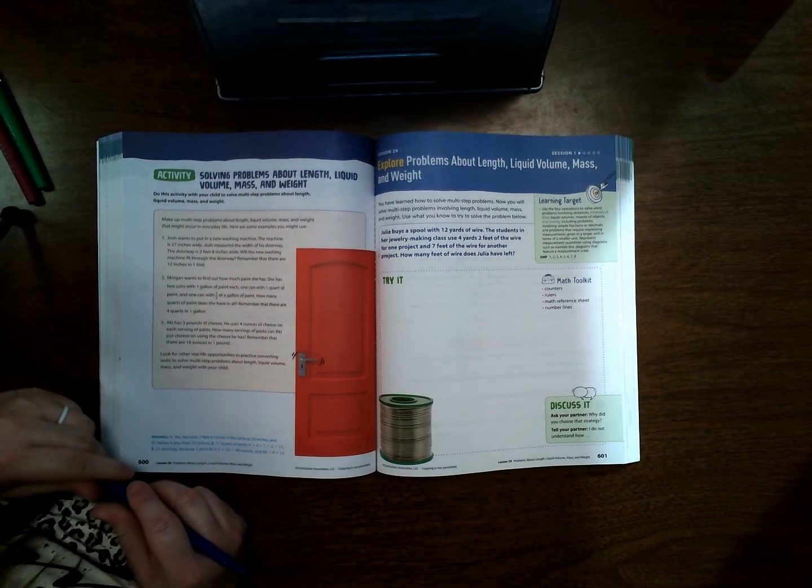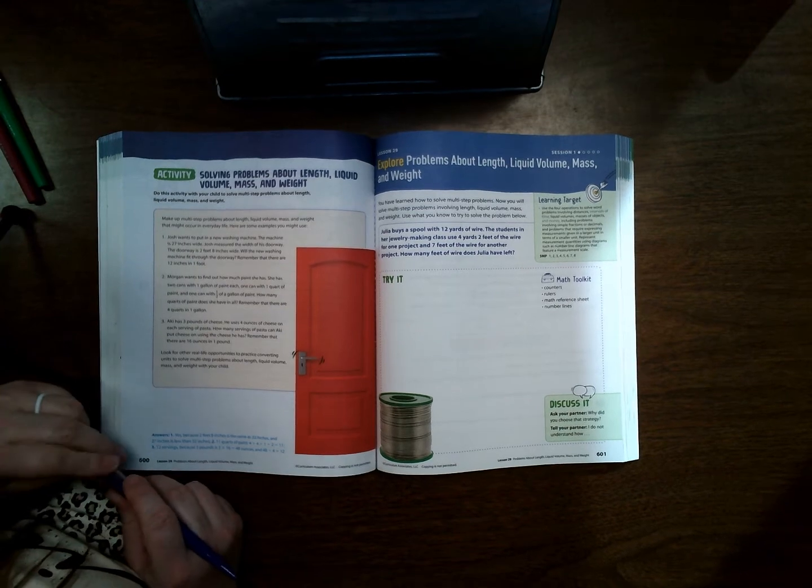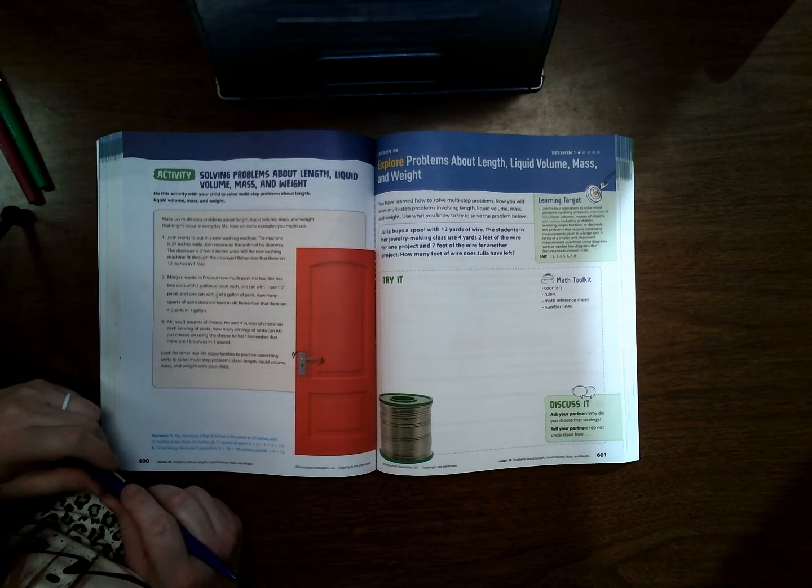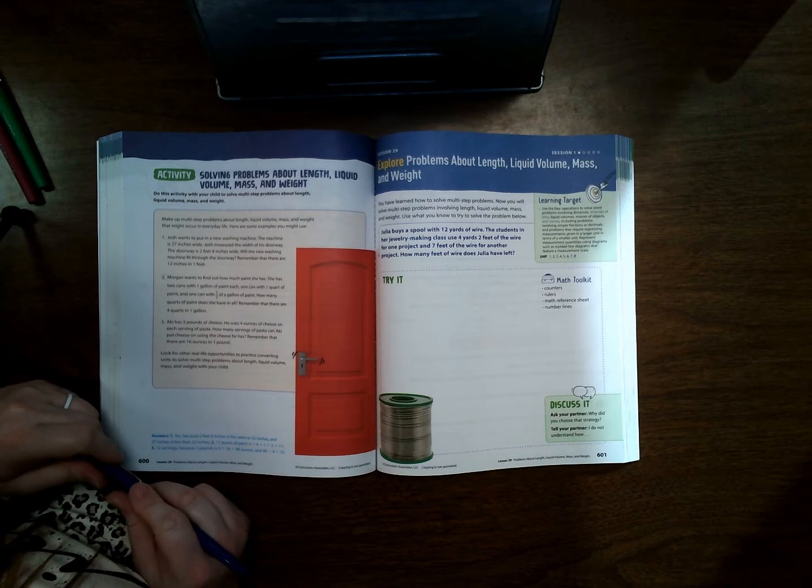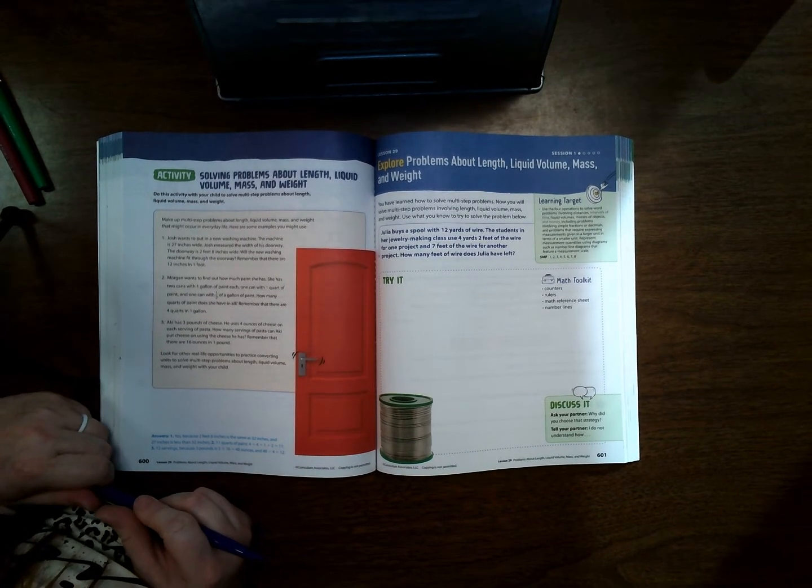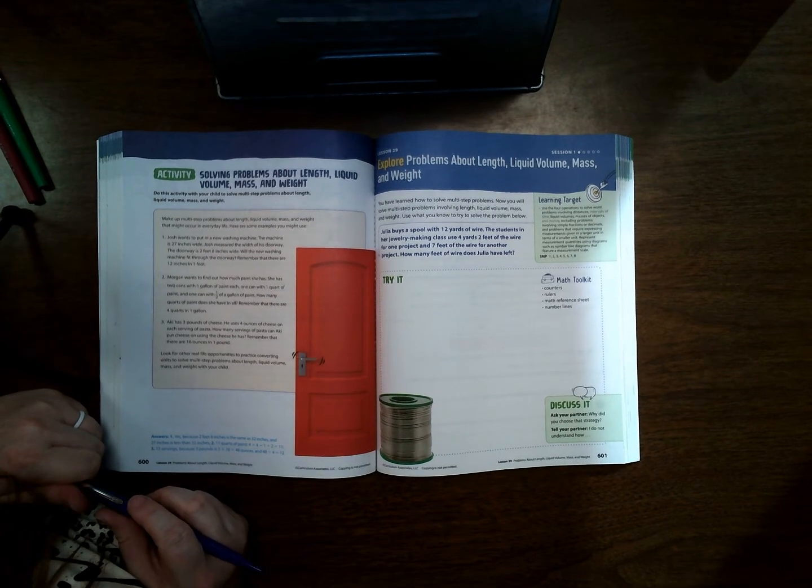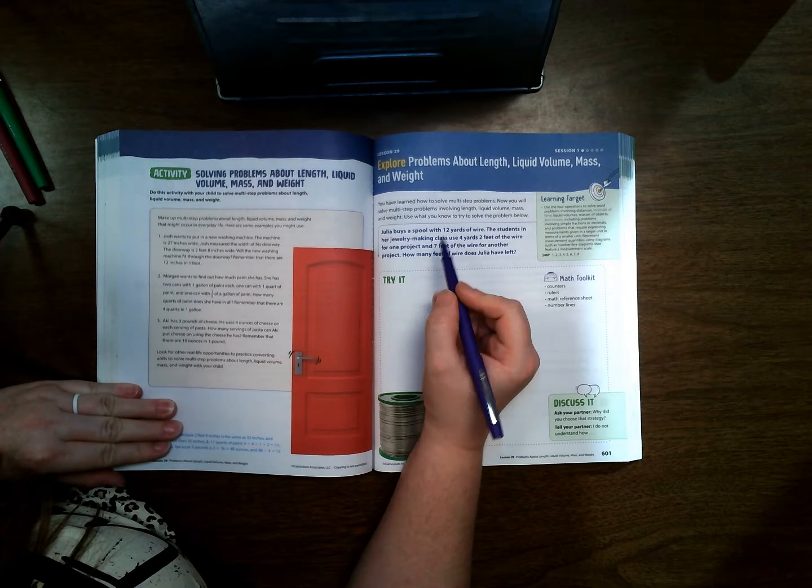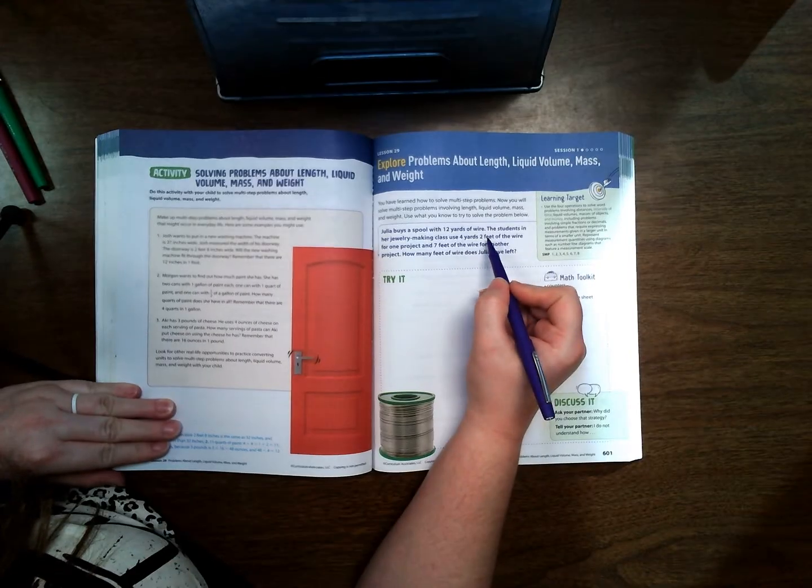Hi students, welcome back. This is Lesson 29, Session 1. We are on page 601. We're learning about problems about length, liquid volume, mass, and weight. Let's get started. Julia buys a spool with 12 yards of wire. The students in her jewelry making class use four yards two feet of the wire for one project and seven feet of the wire for another project.